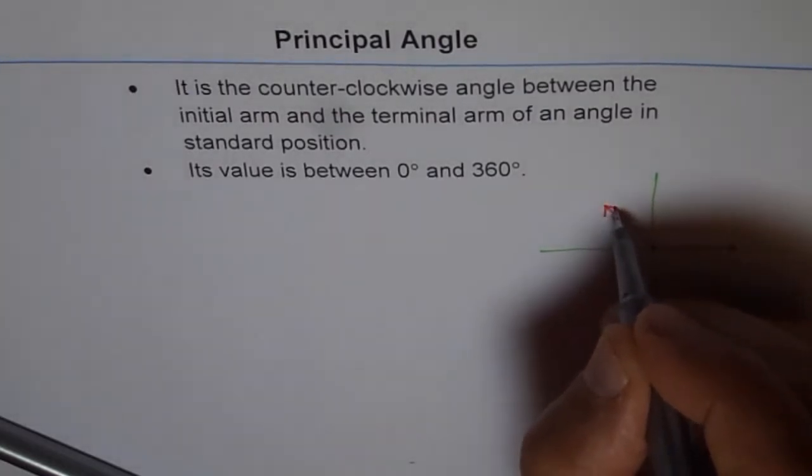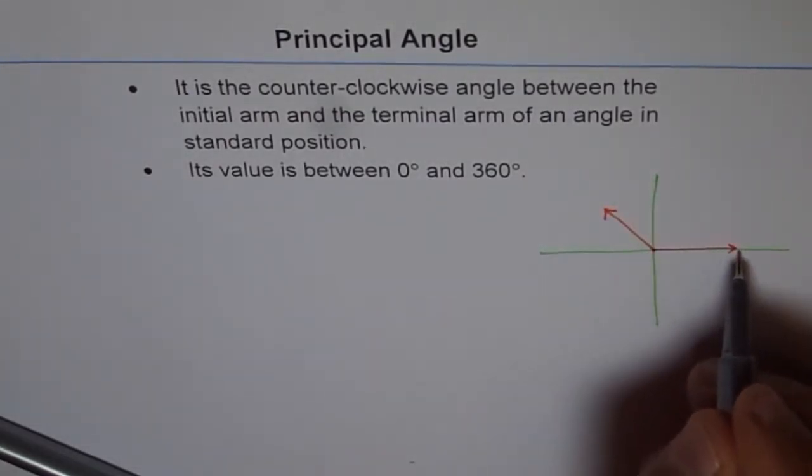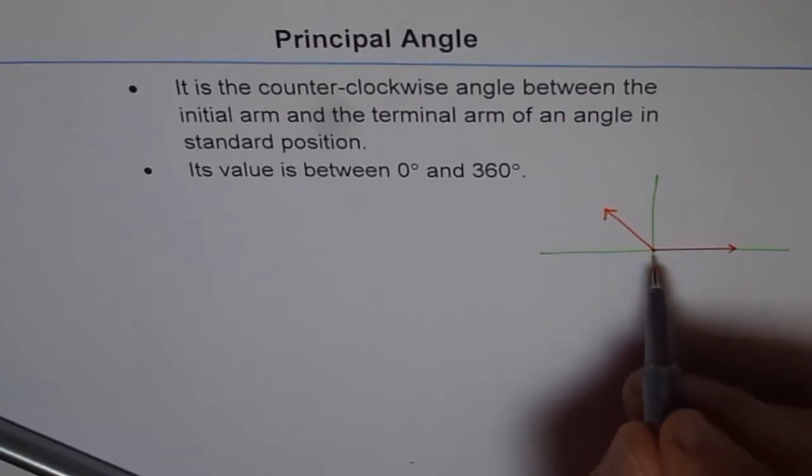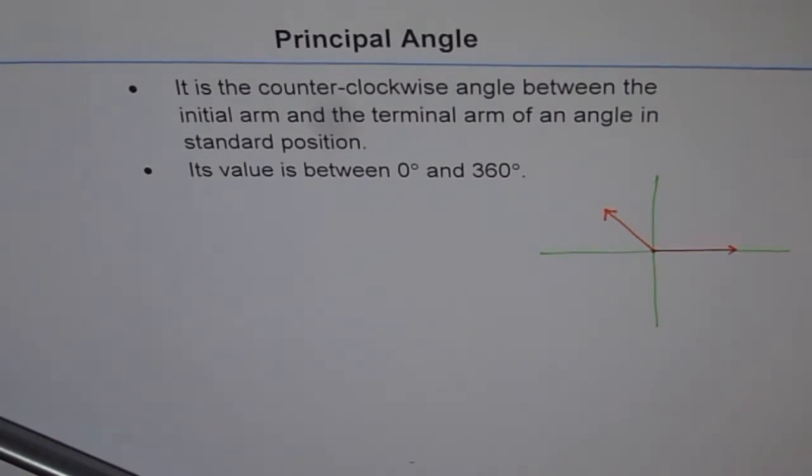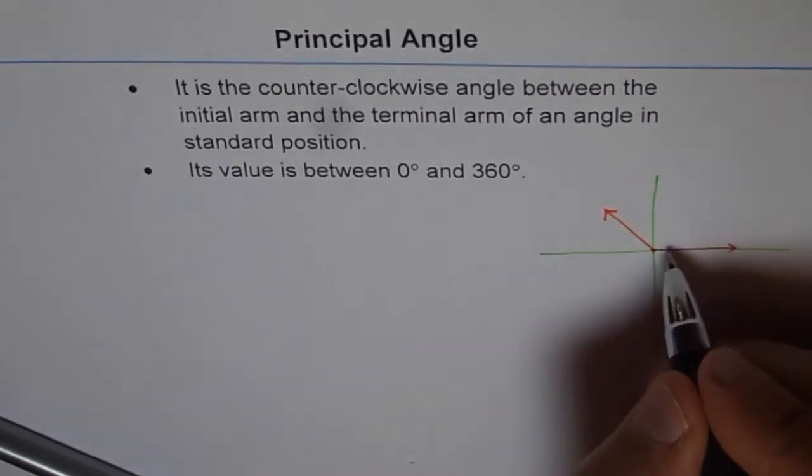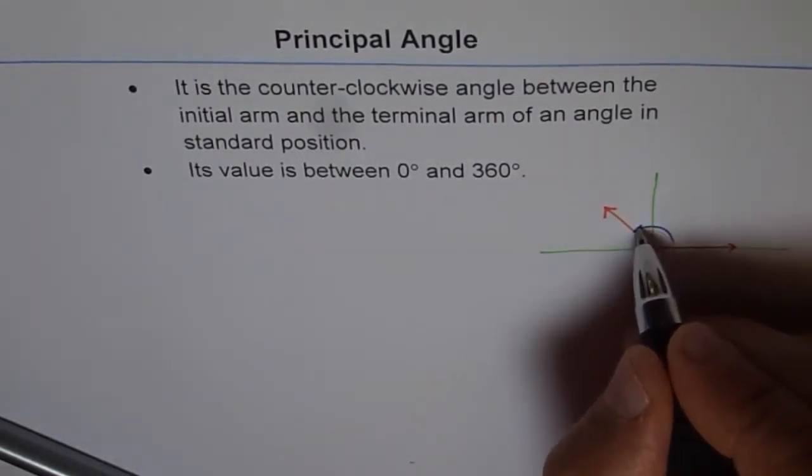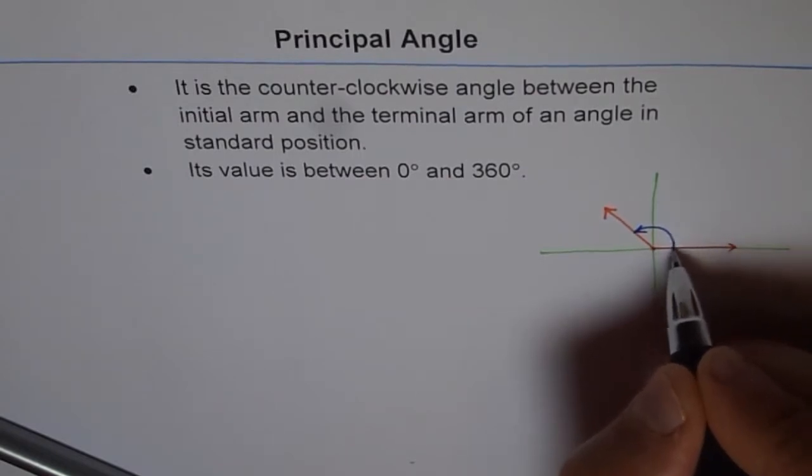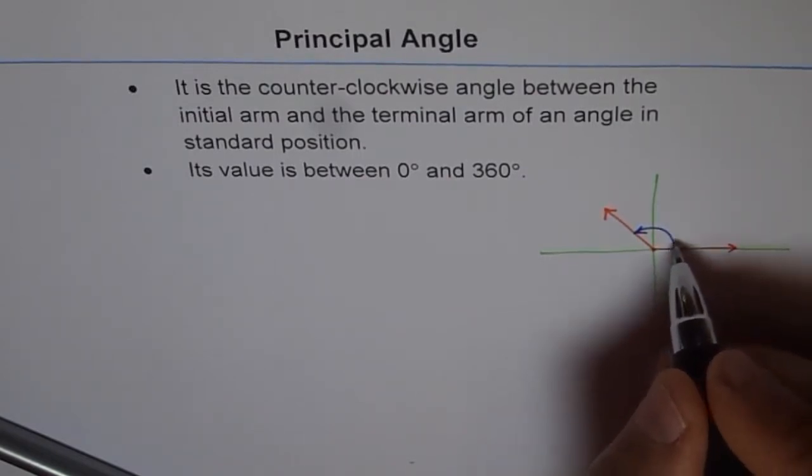Let's say this is our terminal arm. So initial arm is along the positive x-axis. Vertex is at the origin. And let's say this is our terminal arm in quadrant 2. In that case, what is the principal angle? The principal angle is the angle which is always measured counterclockwise, like this. So that is the principal angle from initial to terminal arm.